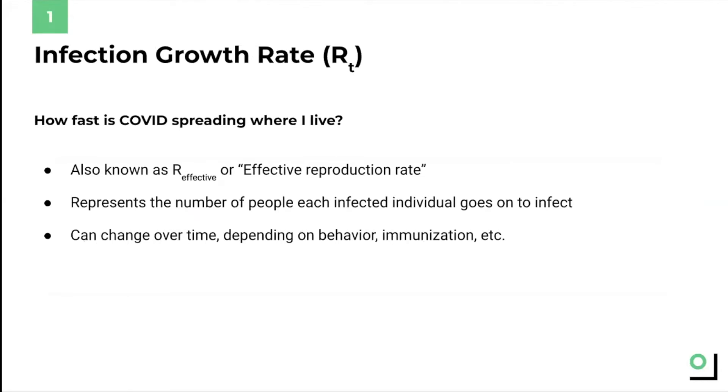Metric one of four is infection growth rate. This is important because COVID is a disease that affects breathing and, like the flu, is spread by a virus that is primarily transmitted by airborne particles.